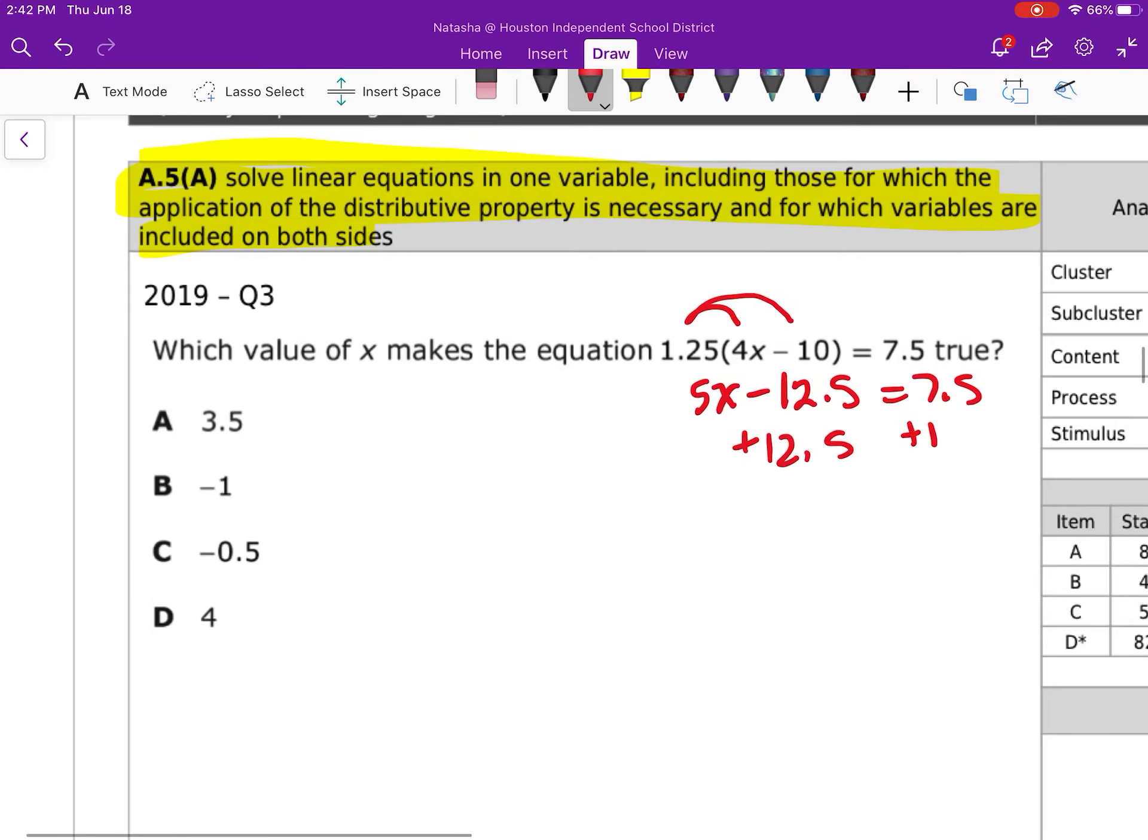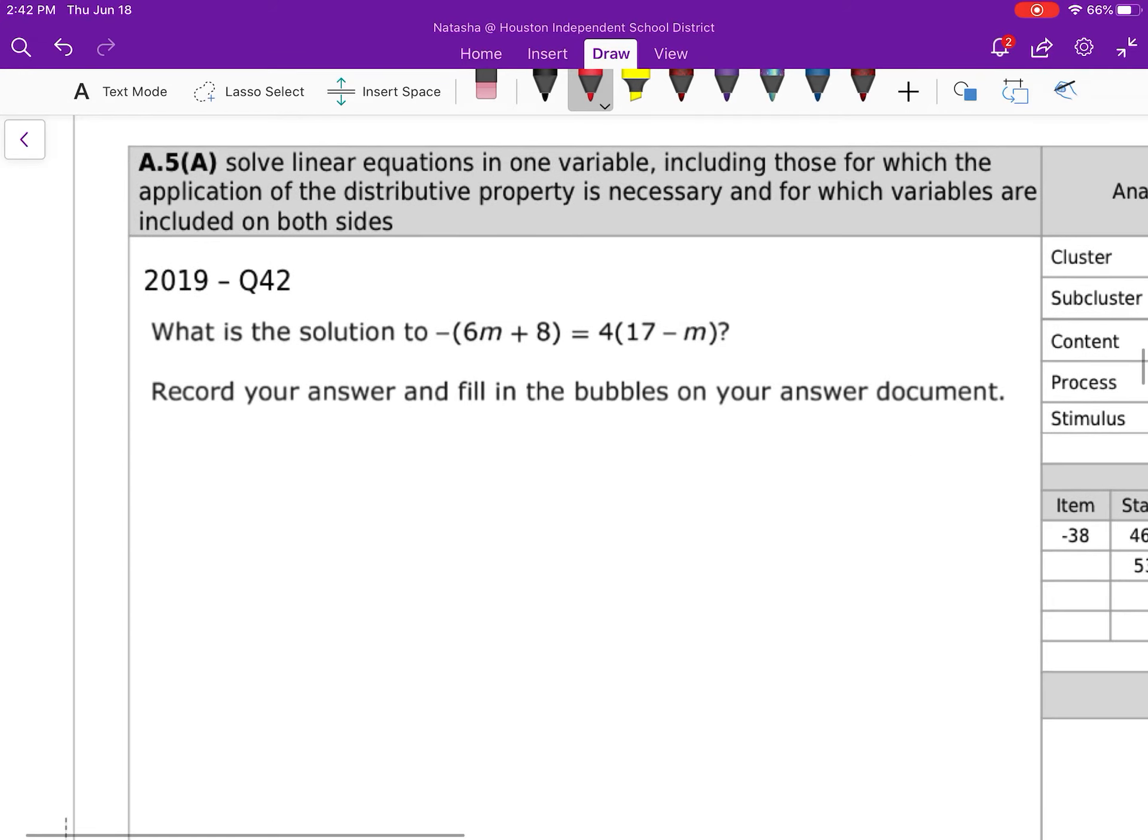I'm going to add 12.5 to both sides. This is going to become 5X is equal to 7.5 plus 12.5. It's going to give me 20. Divide by 5. That gives me 4. So that gives me my answer choice, D.